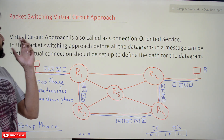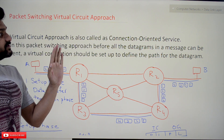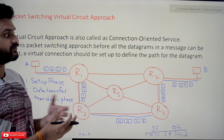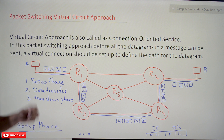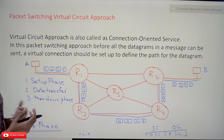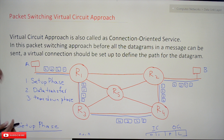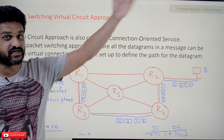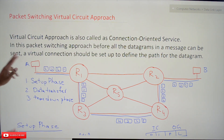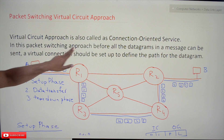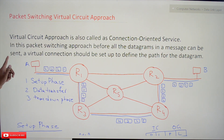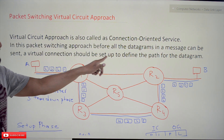In this class we'll understand the virtual circuit approach. This is going to be a big video because the content is large, so try to focus. Virtual circuit approach is also called connection-oriented service, whereas the datagram approach is a connectionless service. In this packet switching approach, before all the datagrams in the message can be sent, a virtual connection must be set up to define the path of the datagrams.